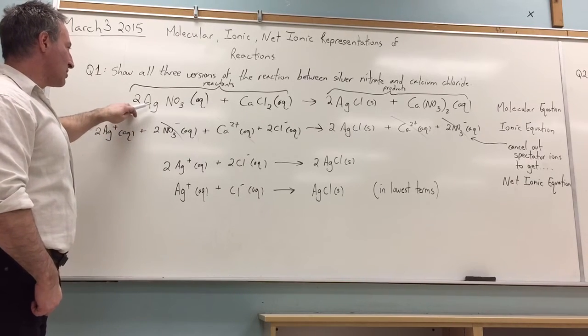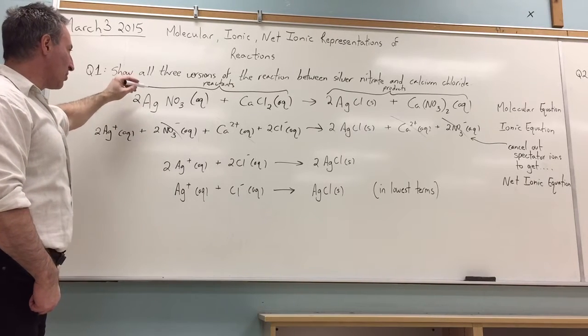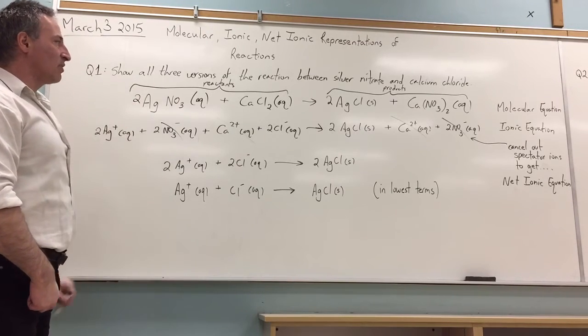Silver has a plus one charge, it's a transition metal. You can look that up on the periodic table, you see there's a little small number one written above the symbol for silver. That tells you that that's the preferred charge for silver.